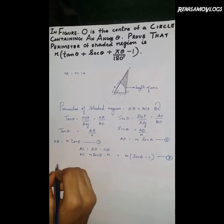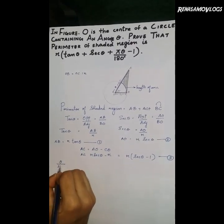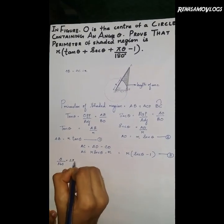BC is the length of the arc, so theta by 360 into 2 pi R.